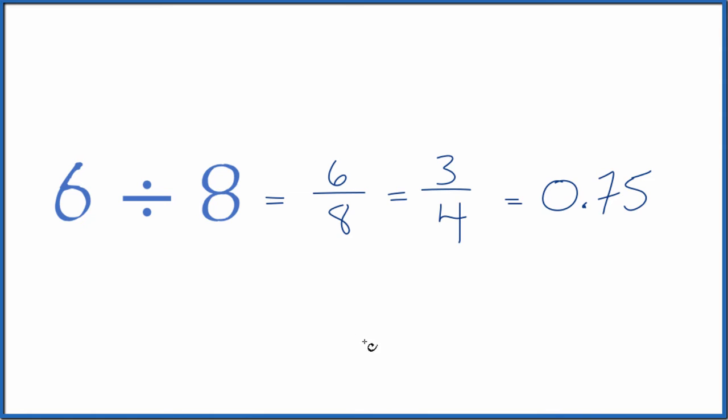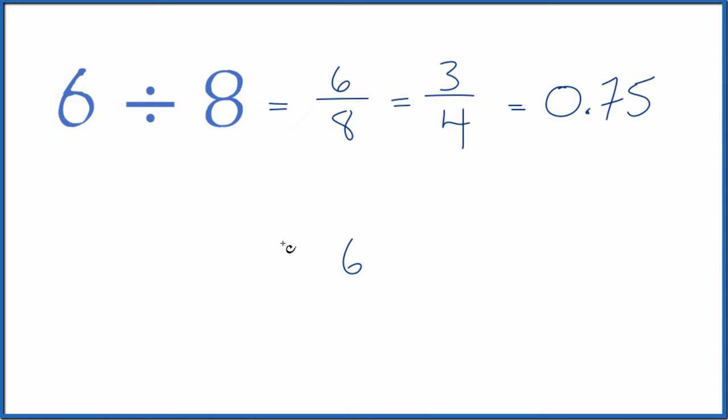You could also do this longhand. You could take 6 and see how many times 8 goes into 6. So it doesn't go into 6. Let's call this 60 and then put 0 and a point up here.